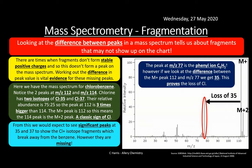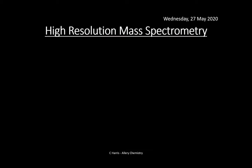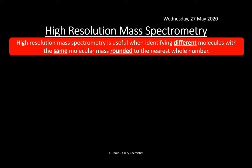We can also have high-resolution mass spectrometry. High-resolution mass spectrometry is really useful when trying to identify molecules with the same molecular mass rounded to the nearest whole number. For example, two molecules could both have a molecular mass of 40 but be made of different atoms. A standard resolution mass spectrometer can't tell the difference, but high-resolution mass spec can distinguish between them to a high degree of precision.